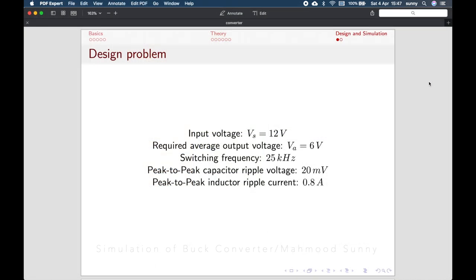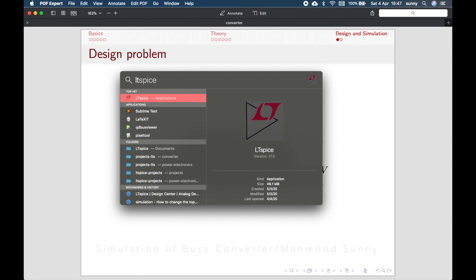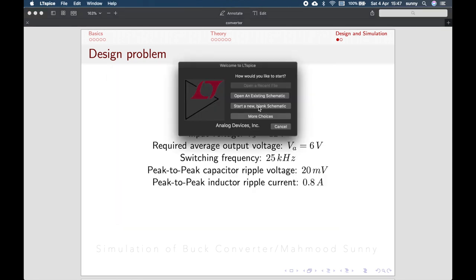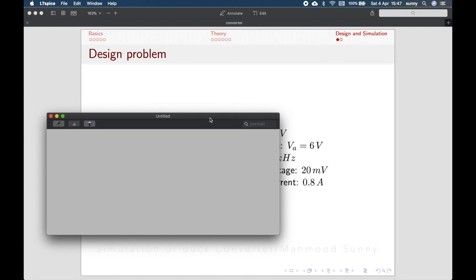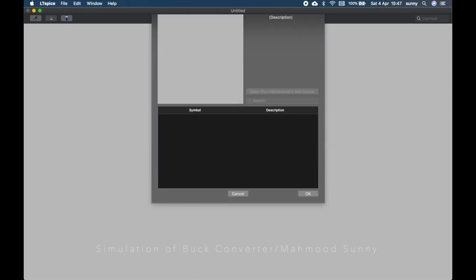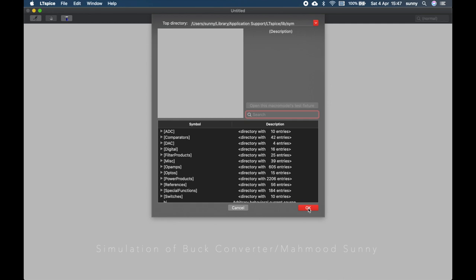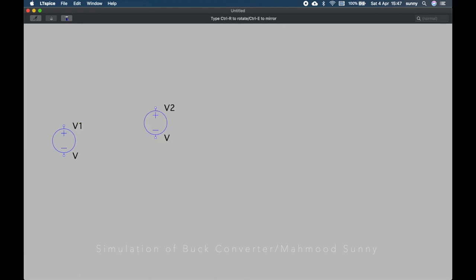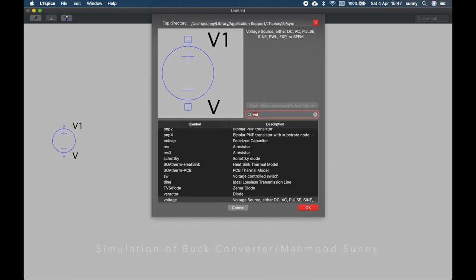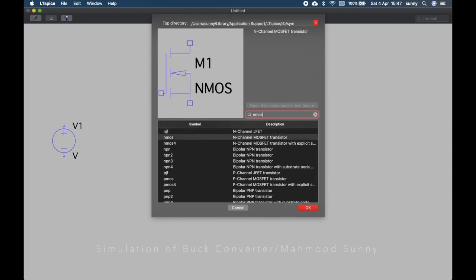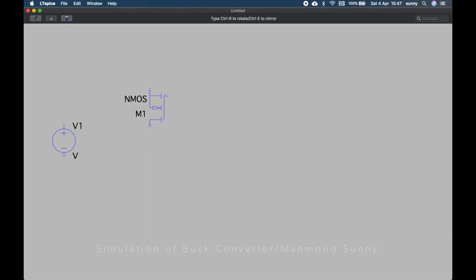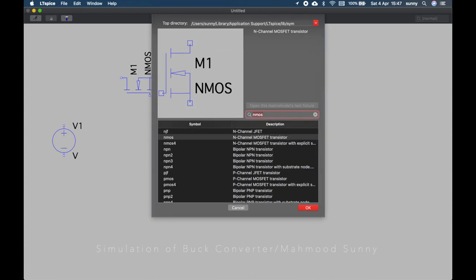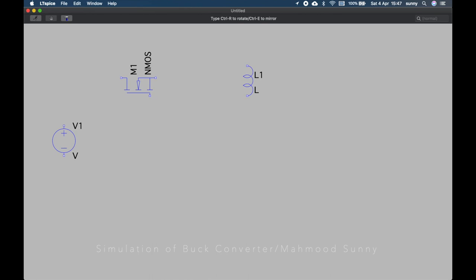Let's begin our simulation. First, open up LTspice. Create a new and blank schematic. We can use the shortcut key F2 to bring up the library menu. First, we will select the voltage source. Let's put it here. Then we will get our internal MOSFET. Ctrl-R to rotate it. Then let's get our inductor, place it here.